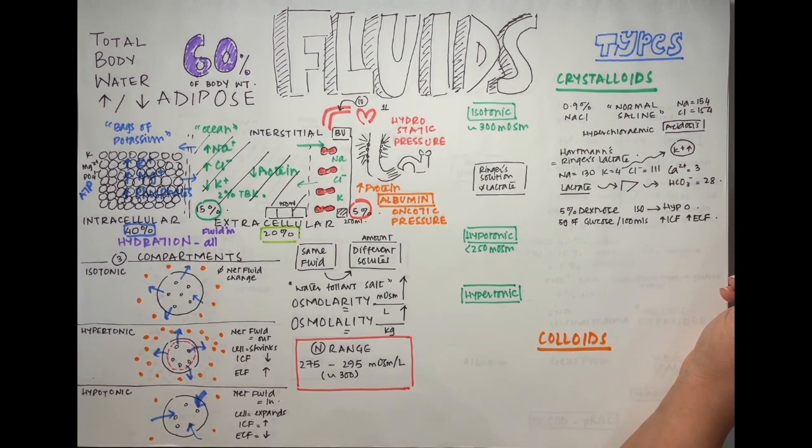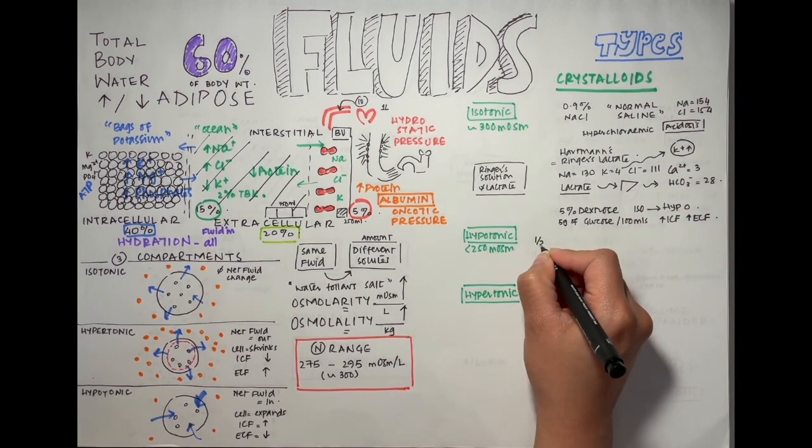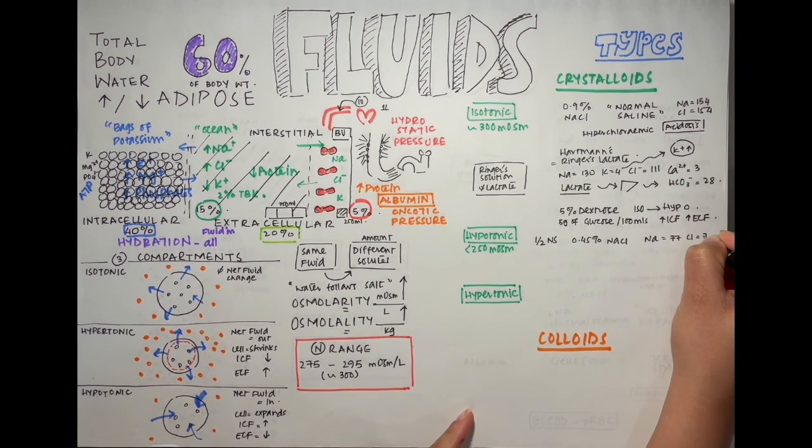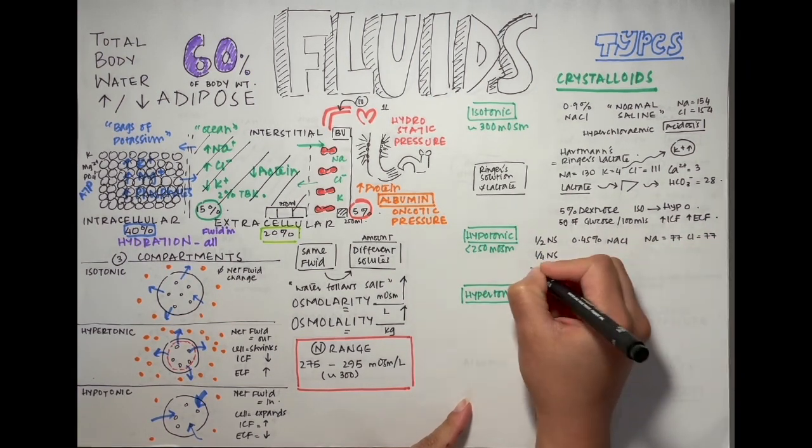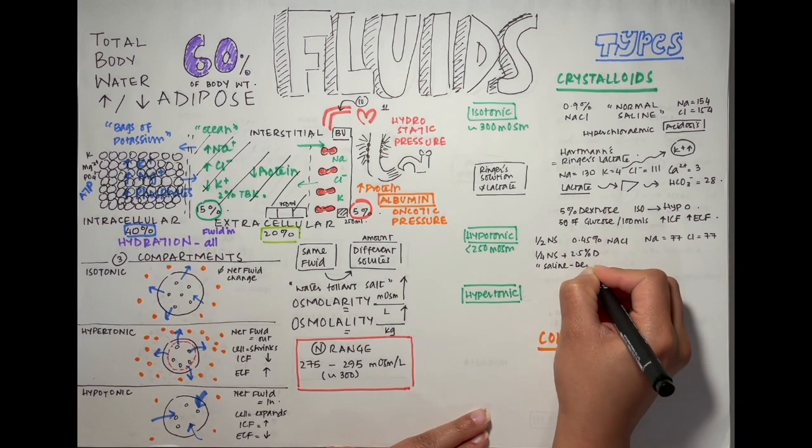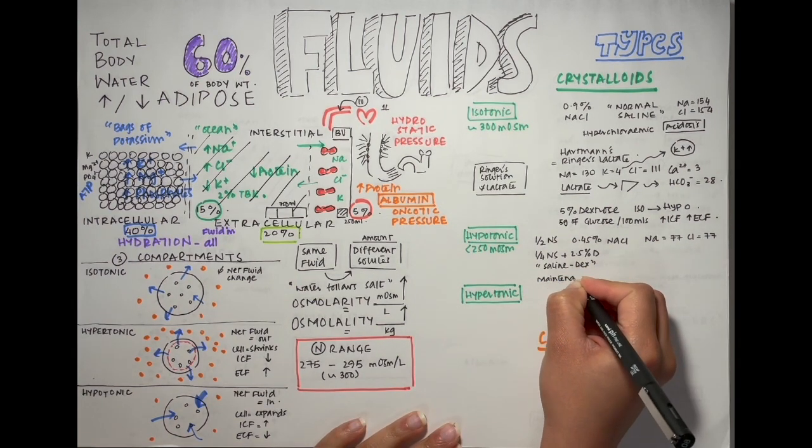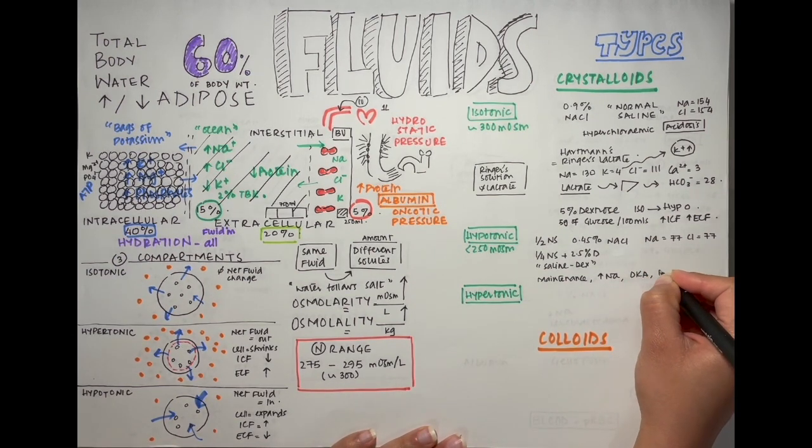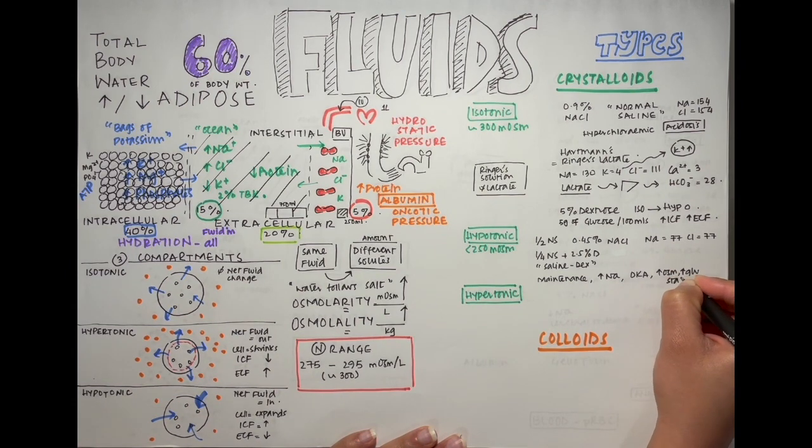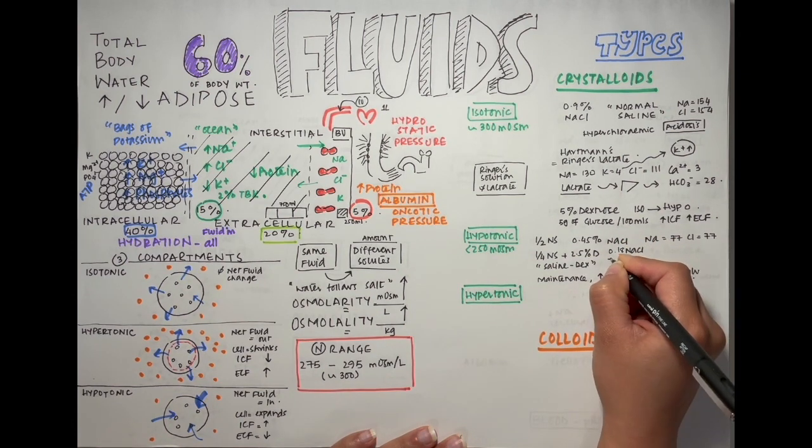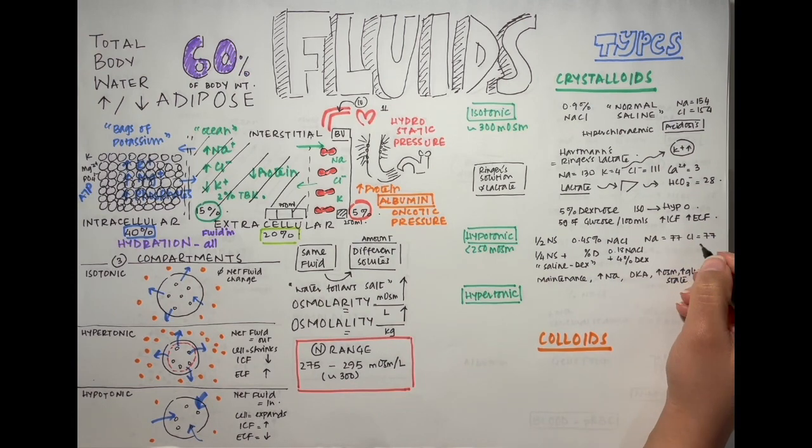There's 5 grams of glucose in 100 mils of water. It's used to both expand intracellular and extracellular fluid compartments. Next up we have hypotonic solutions. There's half normal saline which contains 77 millimoles of sodium and chloride per liter. There's quarter normal saline with 4% dextrose. It's called saline dex and it's used for maintenance because it doesn't have a huge amount of sodium. It's used in hypernatremia because it doesn't have a huge amount of sodium, it has the right amount, and in DKA as well.